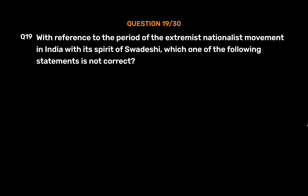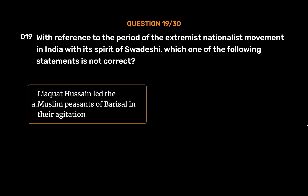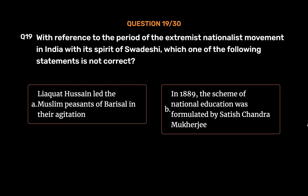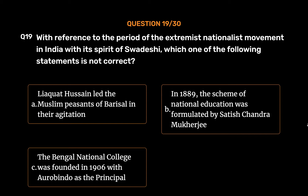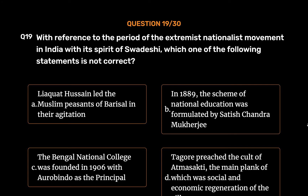Question No. 19. With reference to the period of the extremist nationalist movement in India with its spirit of Swadeshi, which one of the following statements is not correct? Option A: Liaquat Hussein led the Muslim peasants of Barisal in their agitation. Option B: In 1889, the scheme of national education was formulated by Satish Chandra Mukherjee. Option C: The Bengal National College was founded in 1906 with Arvind as the principal. Option D: Tagore preached the cult of Atma Shakti, the main plank of which was social and economic regeneration of the villages. The correct answer is Option A.